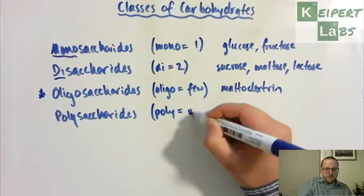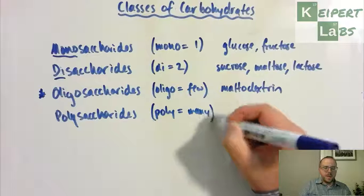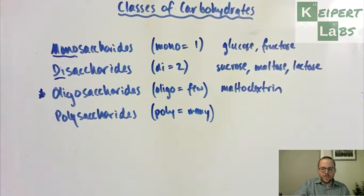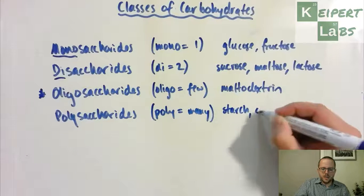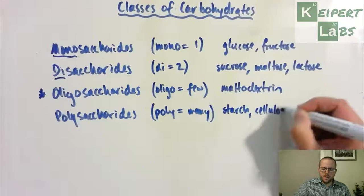Lastly, when we're thinking poly, we're thinking many saccharides joined together. The three main ones to be familiar with are starch, cellulose, and glycogen.